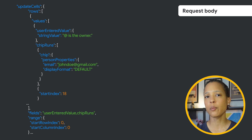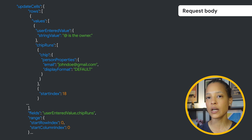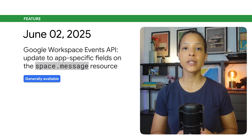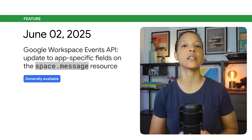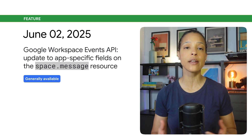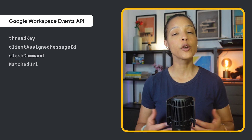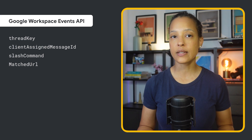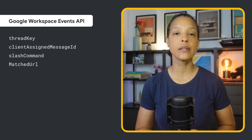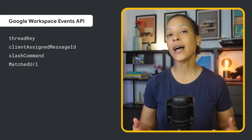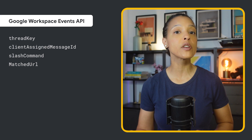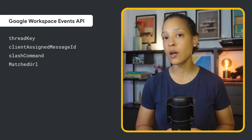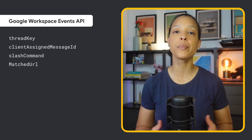The following example shows how to write a people chip and plain text into a single cell A1. There's also an update for Google Chat apps that use the Google Workspace Events API to subscribe to Google Chat events. When the created and updated Google Chat events are sent, the Thread key, client-assigned message ID, slash command, and matched URL app-specific fields on the space.message resource are now populated.